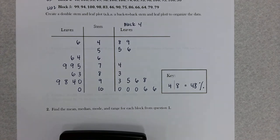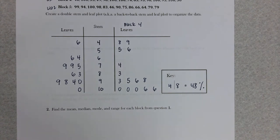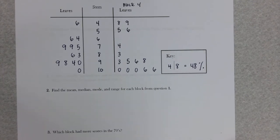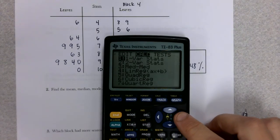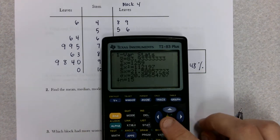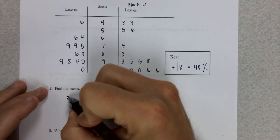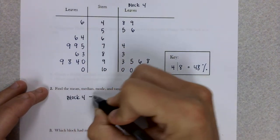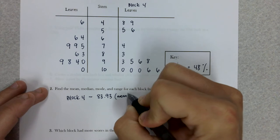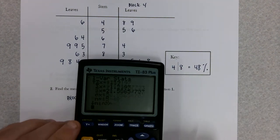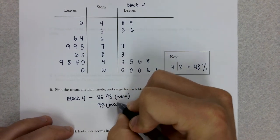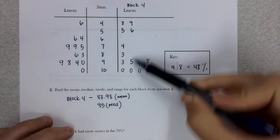Number 2: find the mean, median, mode, and range. You can do this easily on your calculator. Hit STAT, scroll to Calculate, choose 1-Variable Stats, and select List 1. Now I can see the mean for Block 4 — Block 4 had a mean of 83.93. For the median, scroll down to find 'Med' — they had a median of 95.